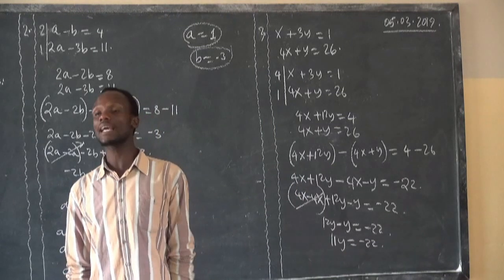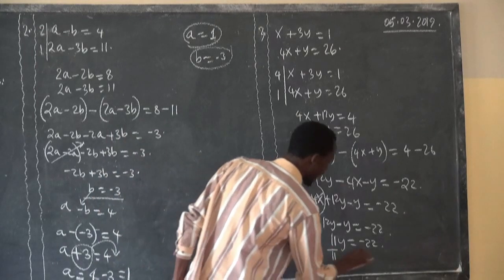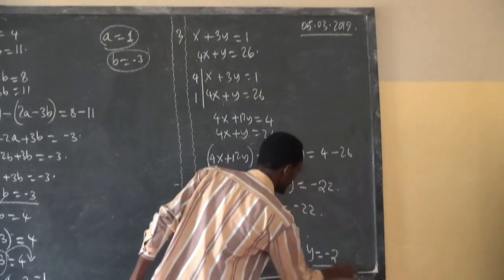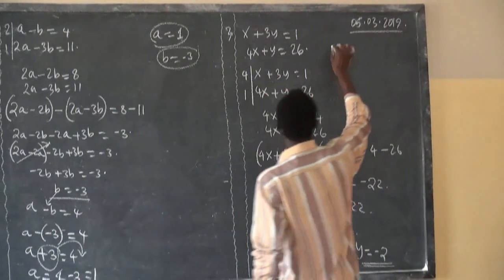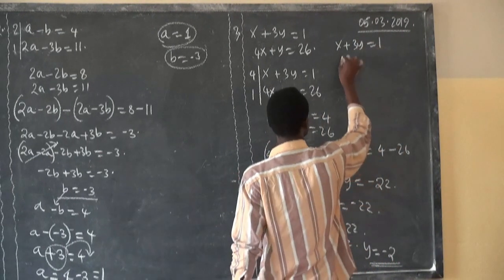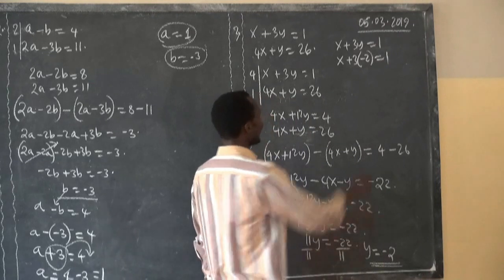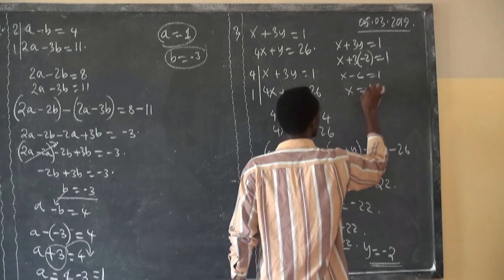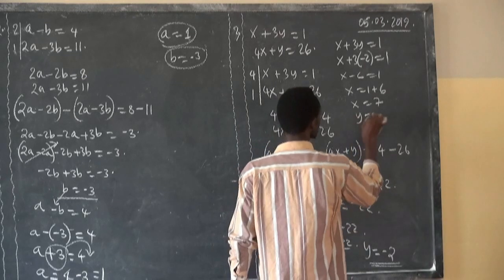Y is equal to negative 2. Now choose one of the original equations. From X plus 3Y equals 1, where Y equals negative 2: X plus 3 times negative 2 equals 1, giving X minus 6 equals 1. Therefore X equals 1 plus 6, so X is equal to 7. Therefore X is equal to 7 and Y is equal to negative 2.